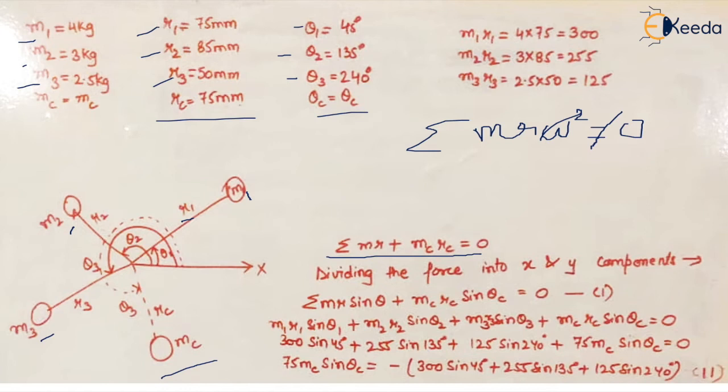We have already calculated m1r1, m2r2 and m3r3. If this equation holds true, if the resultant of forces is zero, that means their x and y components should also be zero in this system. So we break the equation into its vertical and horizontal components.